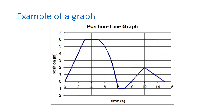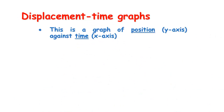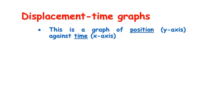Now there are a number of things that these graphs can tell us, so I'm going to quickly run through in point form what information we can draw from a position-time graph. On a position-time graph we put position on the y-axis as the dependent variable, and time across the x-axis as the independent variable.